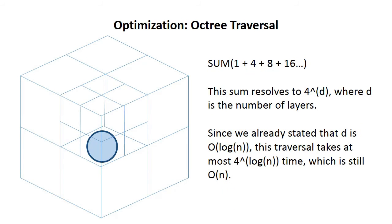This sum resolves to four to the D, where D is the number of layers, and since we've already stated that D is on the order of log N, it means that the traversal takes at most four to the log N time, which is still O of N. It's just a worse O of N than what we were doing previously.